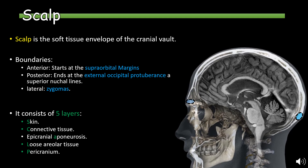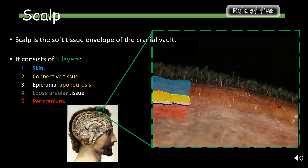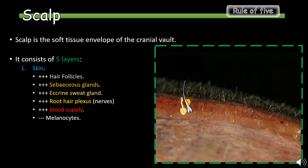As mentioned earlier, the scalp consists of five layers: the skin, connective tissue, the epicranial aponeurosis, loose areolar tissue, and the pericranium. Please pause the video to differentiate between the different layers on the visualization slide. Next, we will discuss each layer separately in order from superficial to deep.